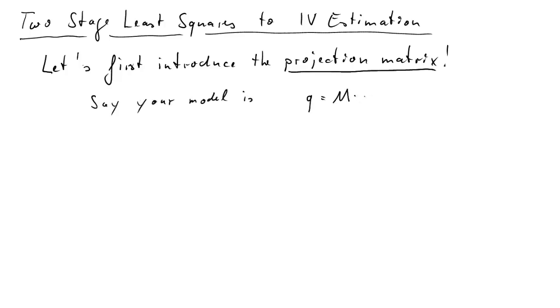Say you have a particular model. Q is a function, a linear function of M, gamma is a parameter vector and w are error terms. Then our OLS estimate for gamma hat is (M'M)^(-1)M'q.